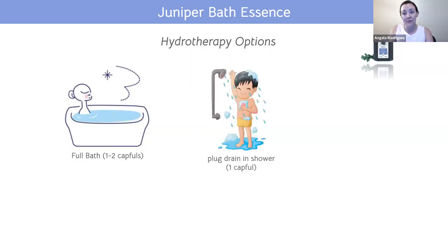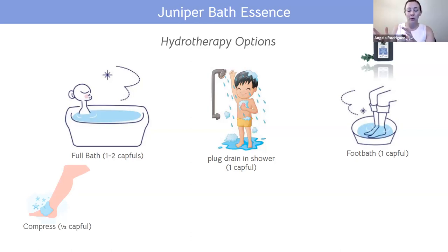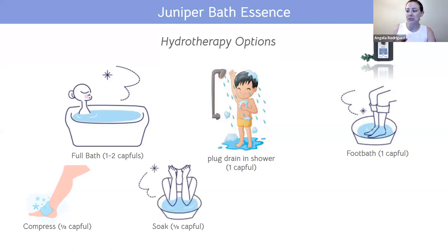If they only shower, just have them plug the drain so that the water pools at the bottom, and put a half or one capful of the bath essence there — it will still absorb well through their feet. You can also do a foot bath with a half capful or a full capful. For a compress, use a dish of warm or cold water — cold water to reduce inflammation, warm water to relax muscles — add about half a capful, dip a washcloth, wring it out, and set it on the affected area for 15 to 20 minutes.